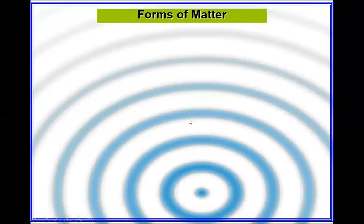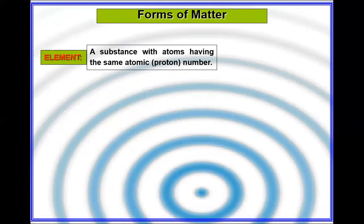Now we're talking about forms of matter. An element is a substance having the same atomic number, or you can say having the same kind of atoms.